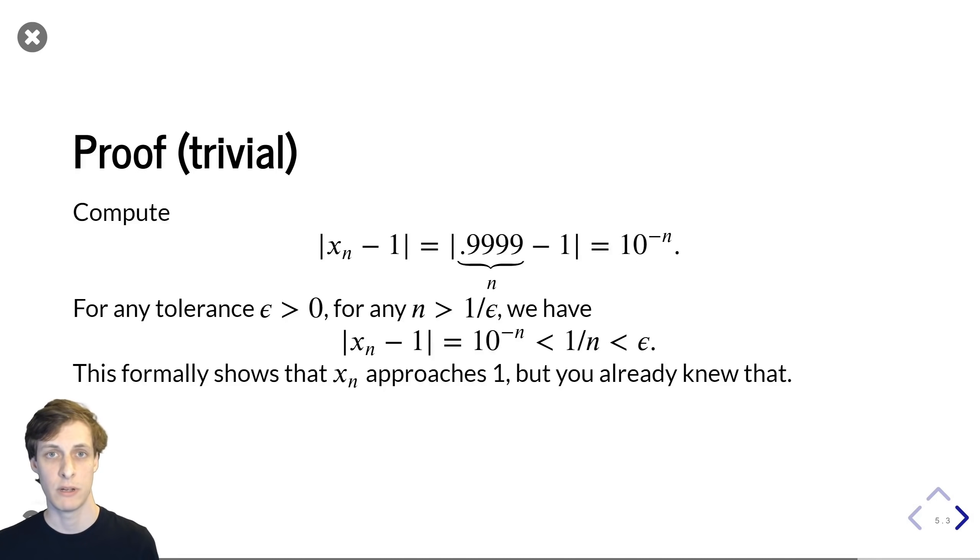But if you really want to finish the argument and give the formal definition, then okay, give me some tolerance epsilon bigger than 0. Then I say, well, for any n that's bigger than 1 over epsilon, we see that that difference is 10 to the minus n, which is less than 1 over n, which is less than epsilon. And that's how you would formally show that the sequence approaches 1. But of course, you already knew that.